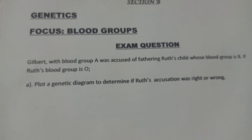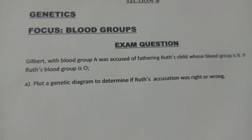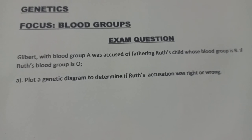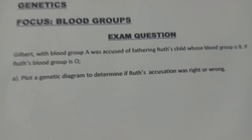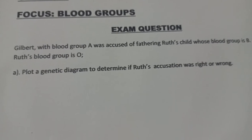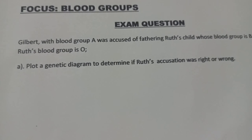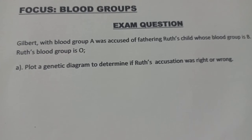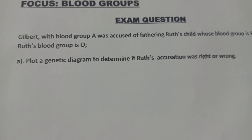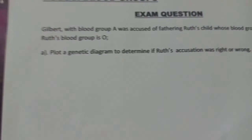The question says: Gilbert, with blood group A, was accused of fathering Ruth's child, whose blood group is B. If Ruth's blood group is O, plot a genetic diagram to determine if Ruth's accusation was right or wrong.